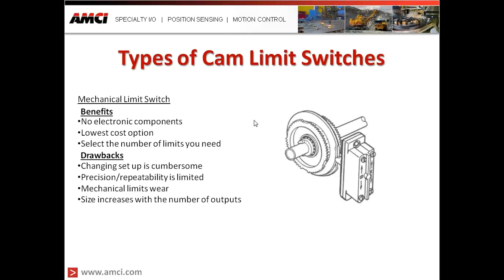Some drawbacks of a mechanical limit switch are that changing the setup is very cumbersome — you often have to get in there with a tool, typically a wrench, to adjust them. The adjustment is very coarse and getting back to the same position between setups is very difficult, often impossible. Mechanical limit switches wear, so replacement components are needed. As the number of outputs increases, so does the size of the unit, requiring much more space for mounting.